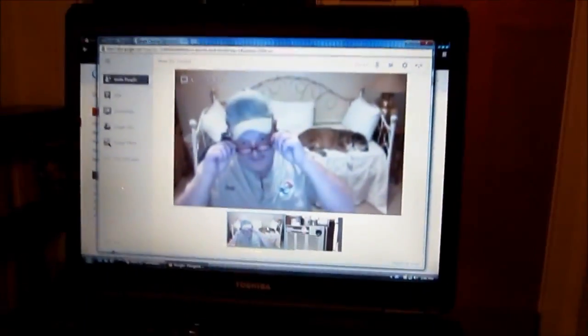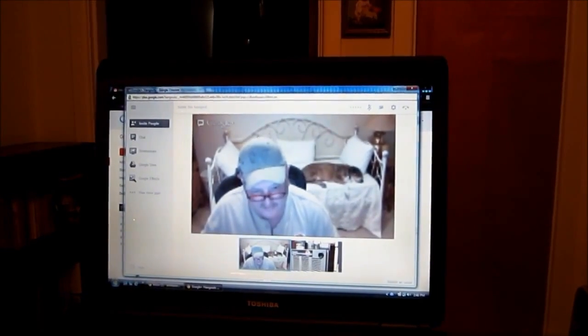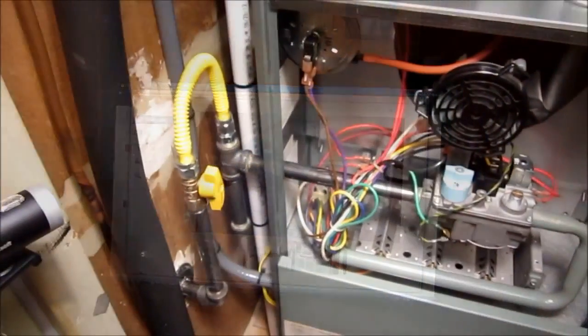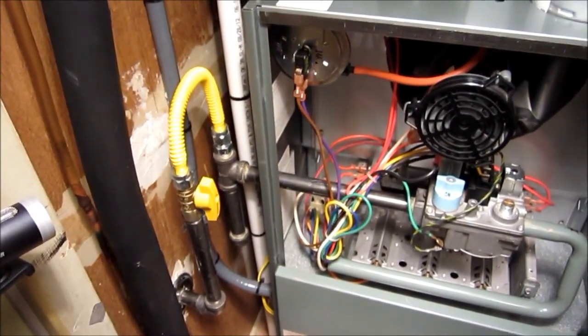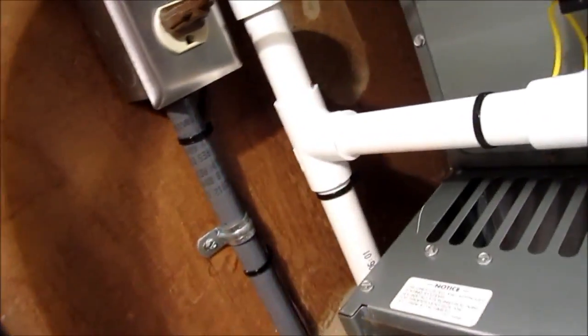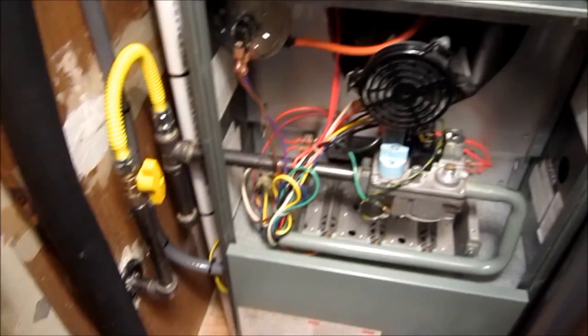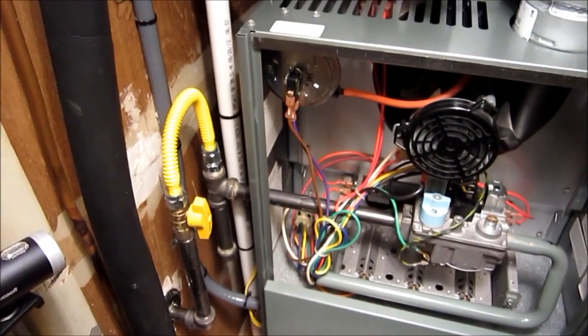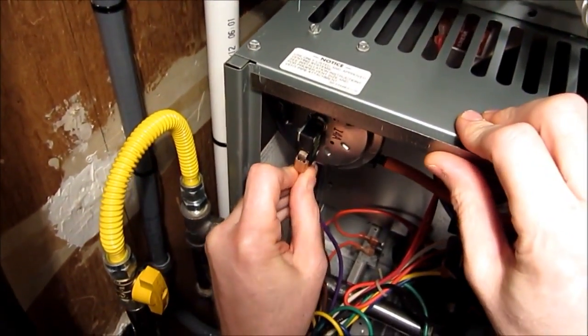All right Ray, let's pop that door off. First thing we're going to do is test it electrically before we pull the manometer out. Ray, make sure the power is off at the disconnect up there. Yes, it's off. Okay, fantastic. We're going to check for a shorted pressure switch. With the power off, I want you to remove the leads off your pressure switch right there.